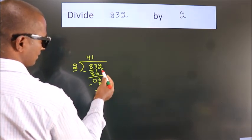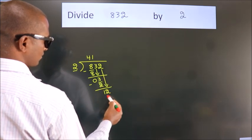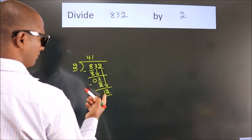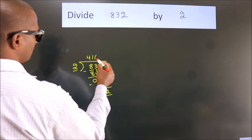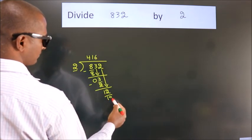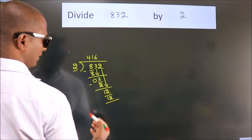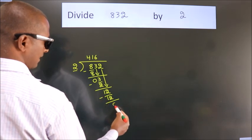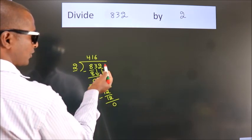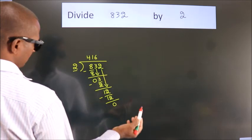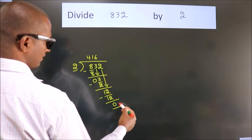After this, bring down the beside number, so 2 down, giving us 12. When do we get 12 in the 2 table? 2 times 6 is 12. Now we subtract and we get 0.